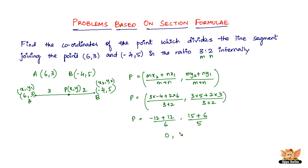So -12 plus 12 gets cancelled, giving 0. The x-coordinate is 0. And 15 plus 6 is 21, divided by 5. So the y-coordinate is 21/5. Therefore, the point P is given by (0, 21/5). The coordinates of the point P that divides the line segment AB in the ratio 3 to 2 is (0, 21/5).